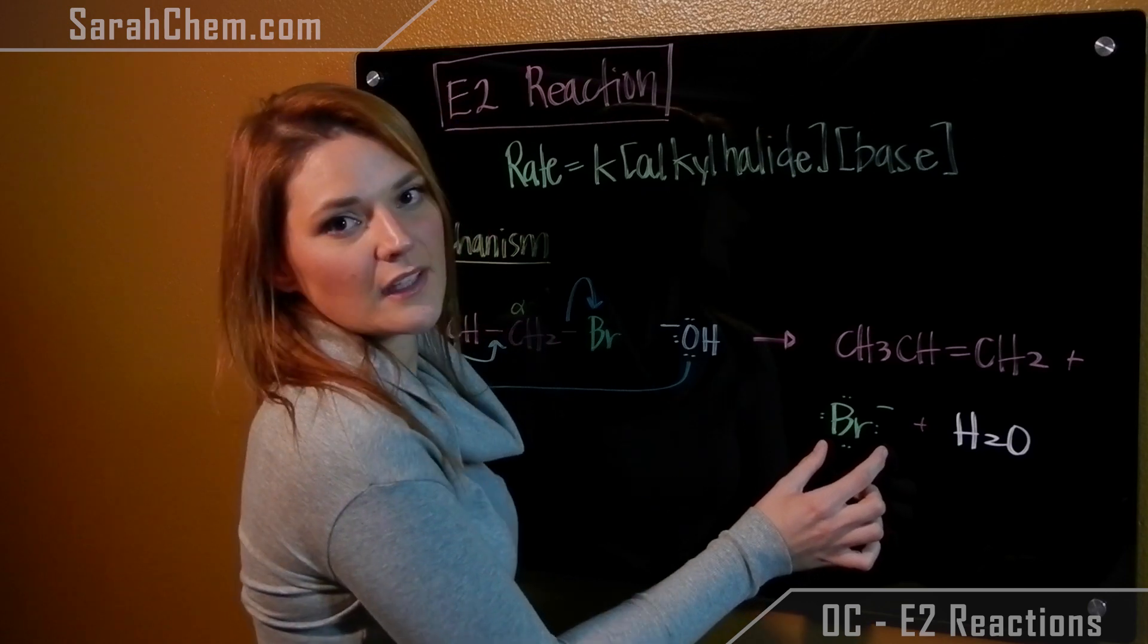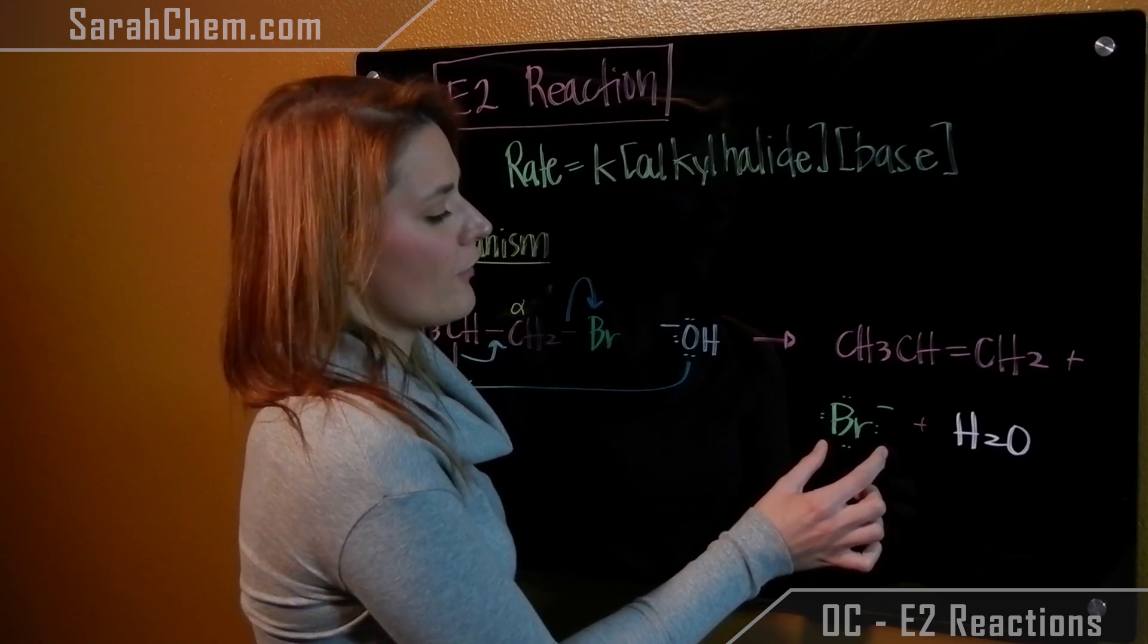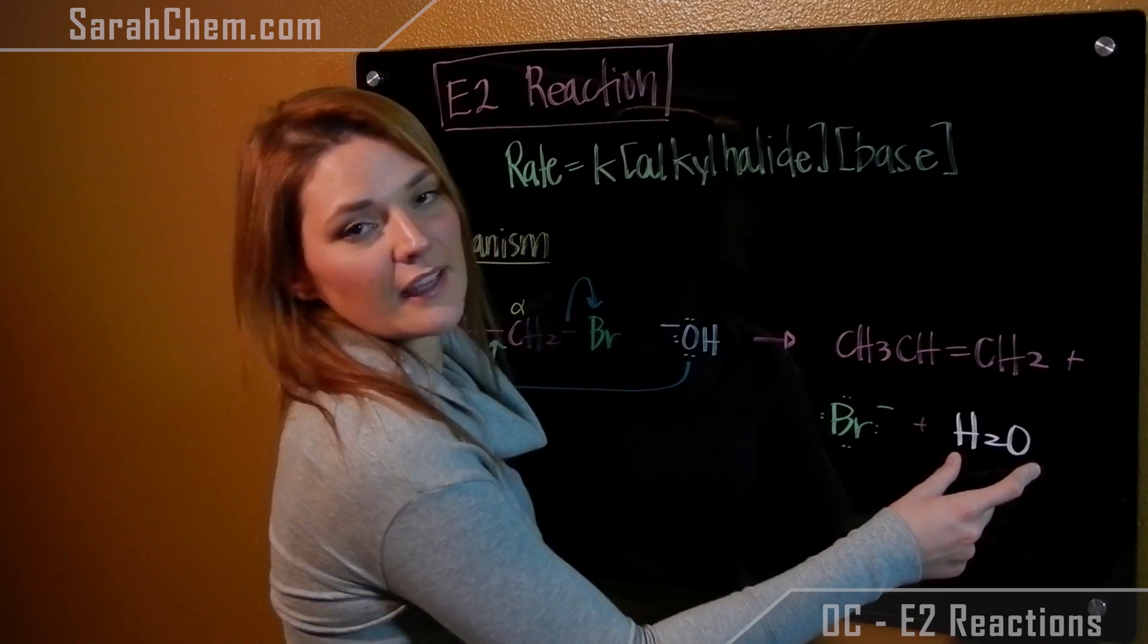our bromide, so basically whatever halogen you have, you'll have the anion of it, and then our protonated base, in this case water.